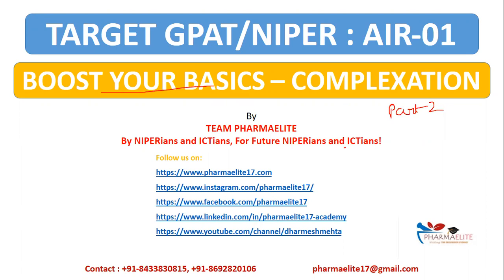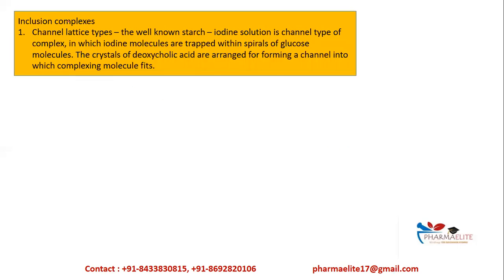Today we will be discussing about inclusion complexes. This is the last category, and we will also solve some MCQs. Inclusion complexes are mainly channel clathrate type. The most common example here is starch-iodine solution. This channel type can trap iodine molecules within the spirals of amylose. The crystals of deoxycholic acid are arranged forming a channel which fits into a complex — something like a channel complex.